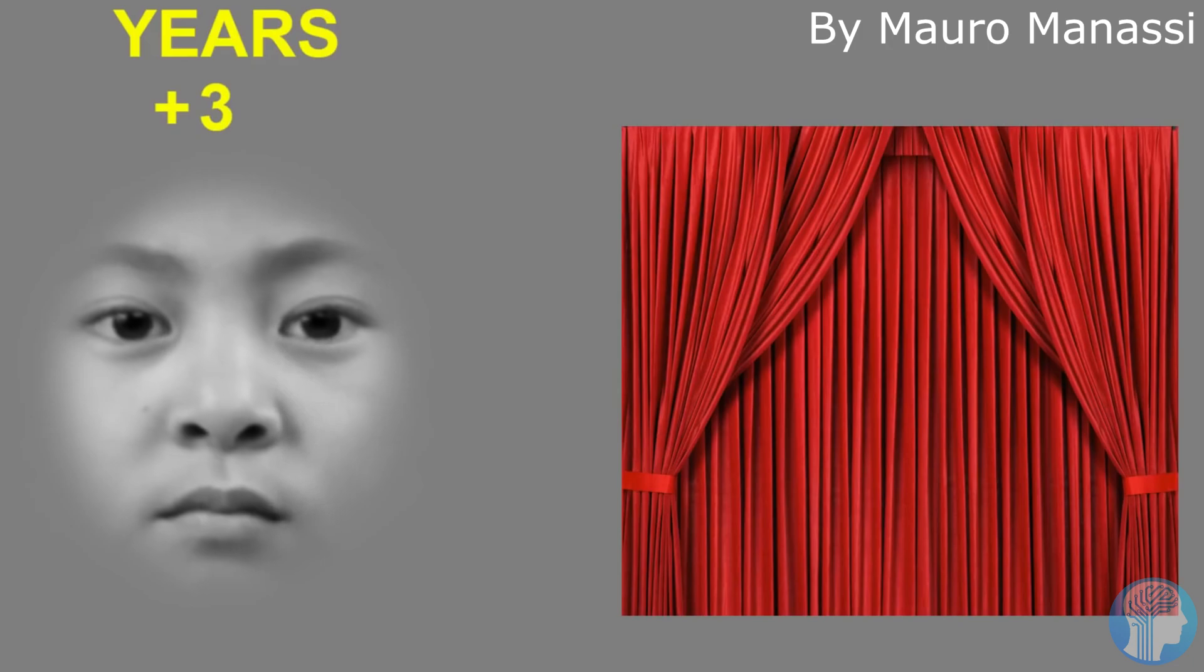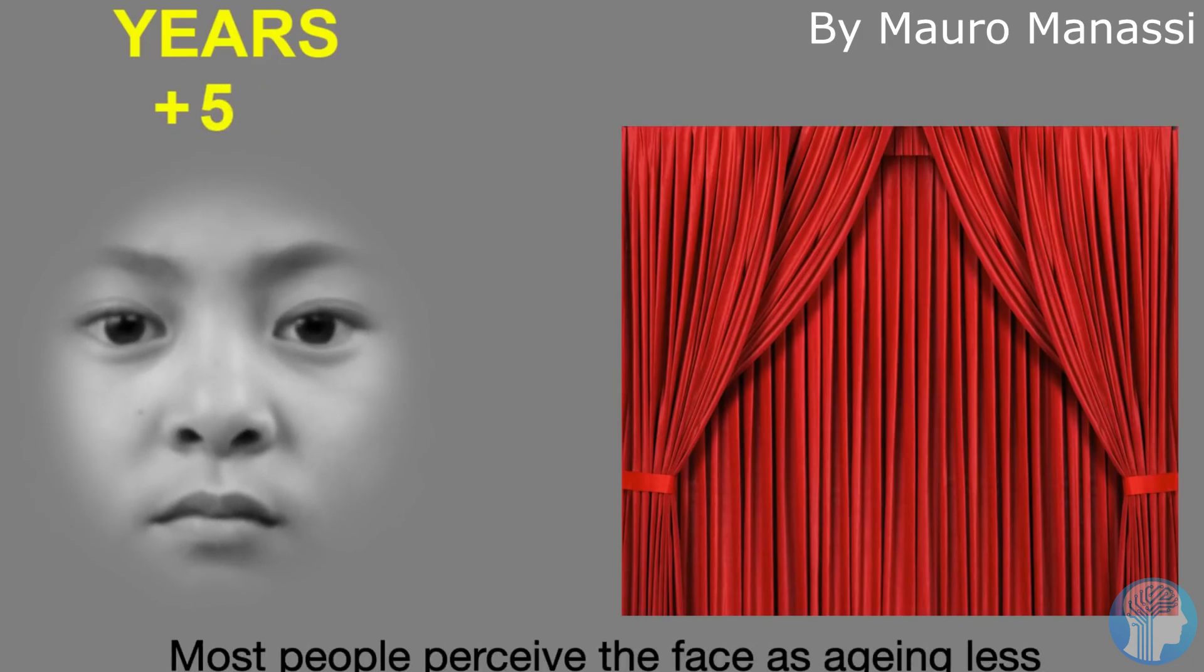The world would be a chaotic place if our brains were constantly updating in real time, with continual swings in light, shadow, and movement. We'd constantly feel as though we were hallucinating.